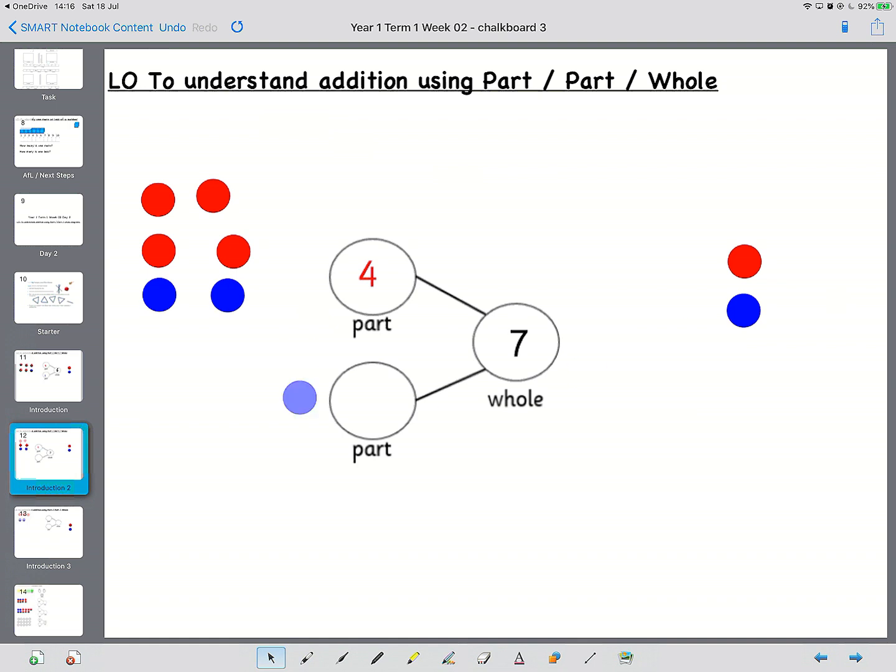Five, six, seven. So the missing part of this part part whole is how many we added to four to get to seven. So let's count them. One, two, three. So there are three blue counters.